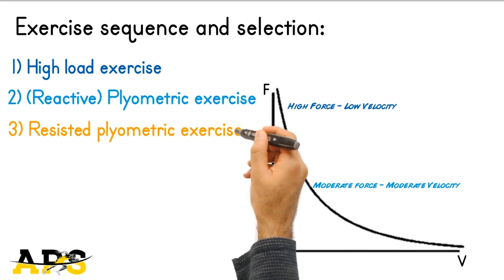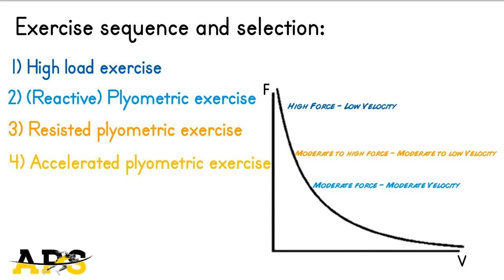The second pair of exercises start with another plyometric, but this time there is additional resistance making the exercise more force-dominant. This exercise aims to set the athlete in a potentiated state for the fourth and last exercise which is an accelerated plyometric characterized by very high velocity.